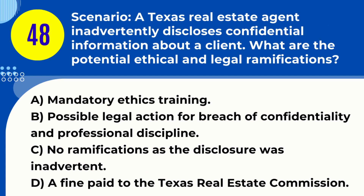Question 48. Scenario: A Texas real estate agent inadvertently discloses confidential information about a client. What are the potential ethical and legal ramifications? A. Mandatory ethics training. B. Possible legal action for breach of confidentiality and professional discipline. C. No ramifications as the disclosure was inadvertent. D. A fine paid to the Texas Real Estate Commission. Answer: B. Possible legal action for breach of confidentiality and professional discipline. Explanation: Inadvertent disclosure of confidential information by a real estate agent in Texas can lead to legal action for breach of confidentiality and professional discipline, including sanctions from the Texas Real Estate Commission.